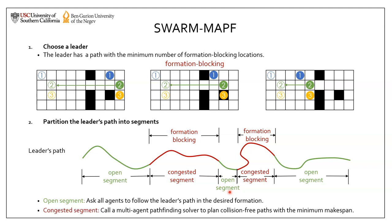For each congested segment, the agents cannot stay in their desired formation. We therefore call a multi-agent pathfinding solver to plan collision-free paths with a minimal makespan, so that the agents can pass through this congested segment as fast as possible.